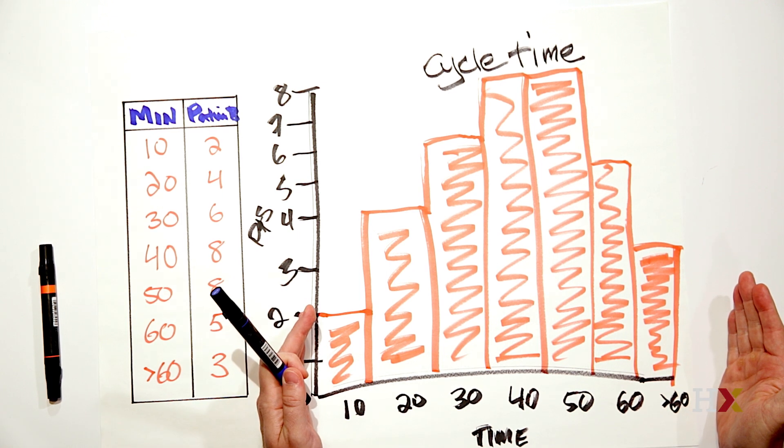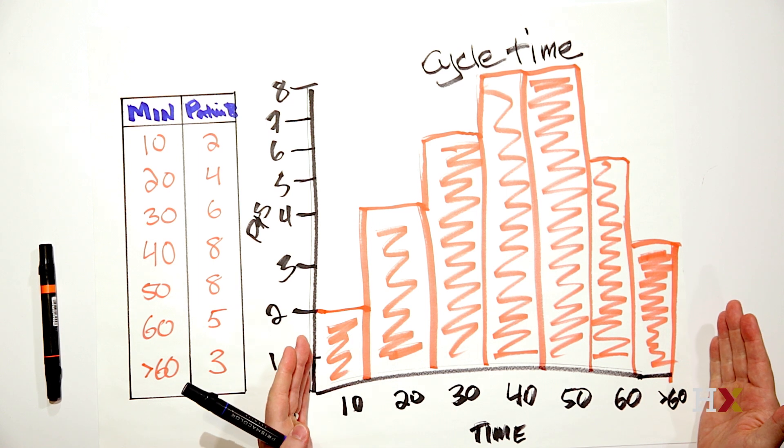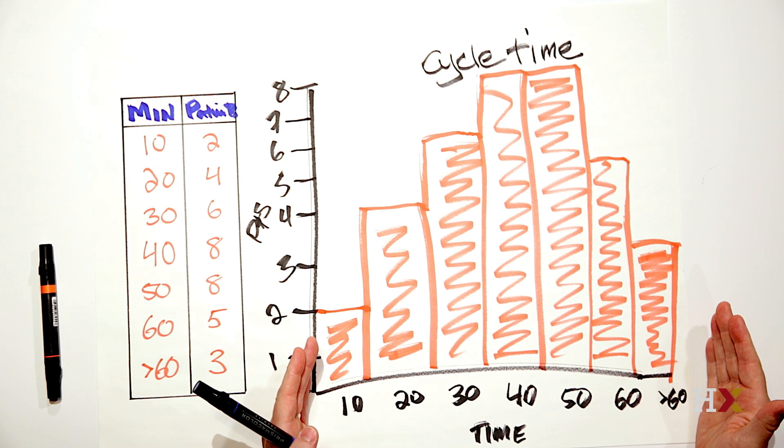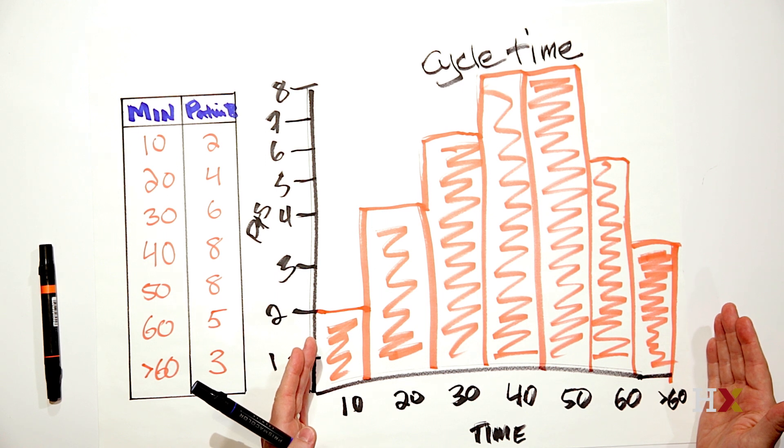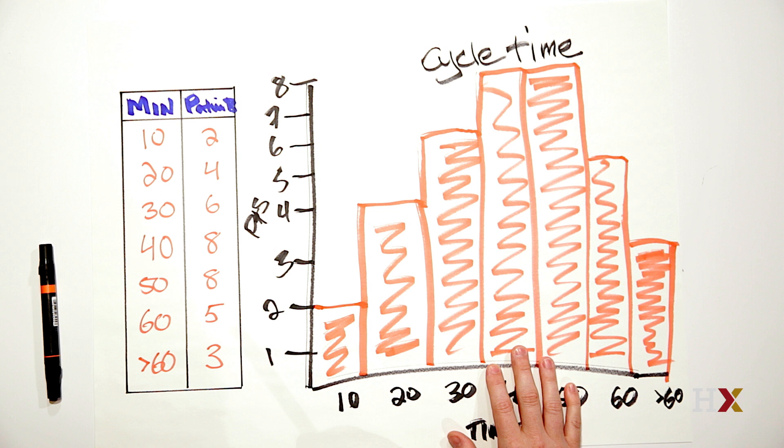It doesn't mean that you like the variation that exists in the times that are here or that you're happy with the amount of time. But this shows that you've got a process that doesn't have any outliers, and now you can work on trying to figure out how to reduce the variation and reduce the time to whatever is appropriate for what you're trying to improve.